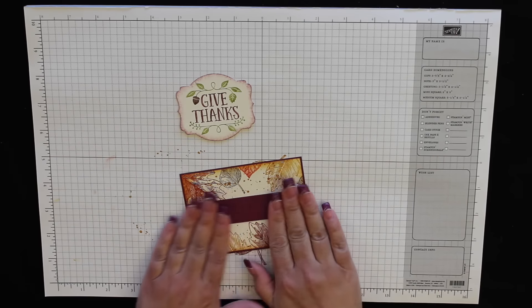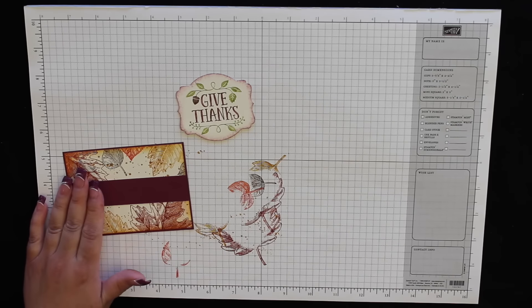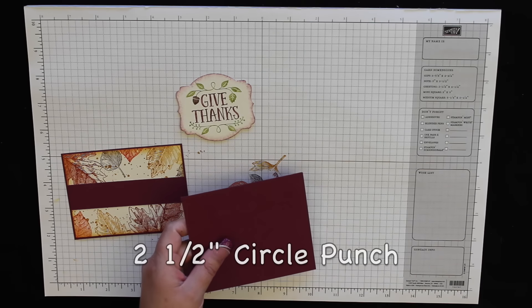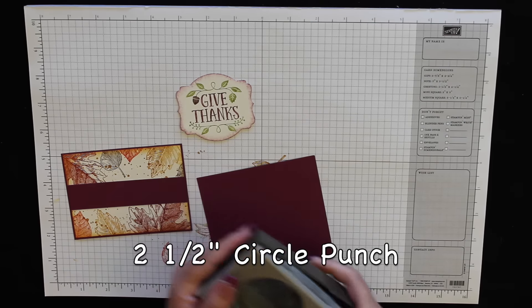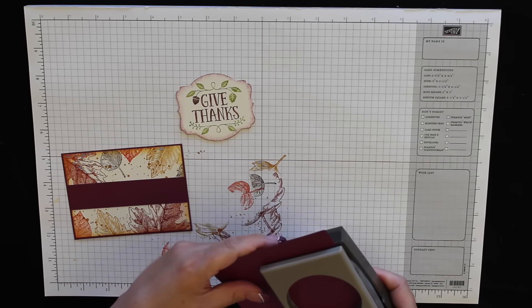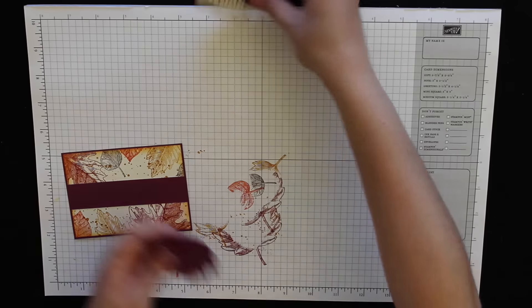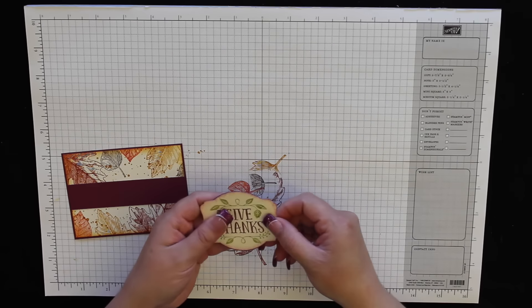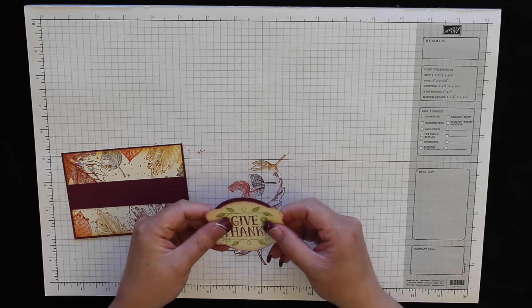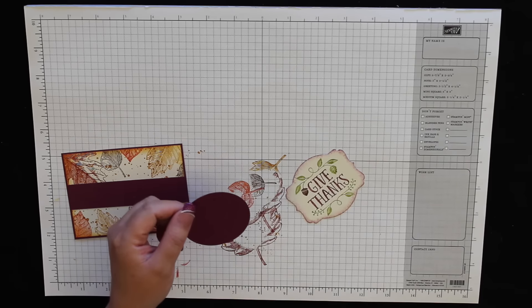Now I have a piece of Rich Razzleberry cardstock, and this one measures, let's see, I think this is one inch by four and a half. Okay, put some adhesive right on the back of that. And I'm going to lay this right across the middle of that center panel. You can eyeball it or you can measure it out if you'd like.